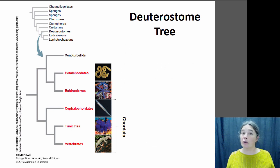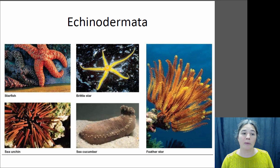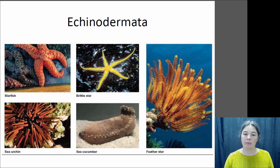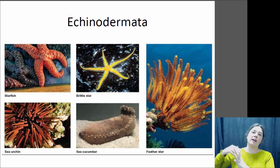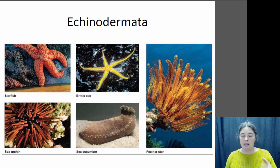Now let's go to the deuterostome tree. Two groups to know: the echinoderms and the chordates. Echinoderms include sea stars — marine biologists prefer that over 'starfish' since they are not fish — brittle stars, sun stars, sea cucumbers, and sea urchins. These animals are interesting because unlike many other bilaterians they appear to have radial symmetry, but they actually have a small organ called a sieve plate, the entryway to their vascular system. They only have one and it's off-center, so there is really only one plane through which you can divide them — meaning they are only nearly radially symmetrical.